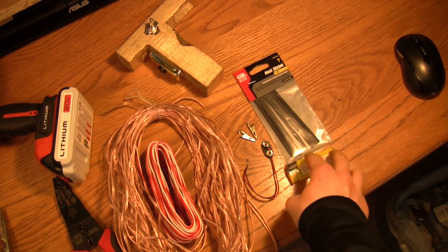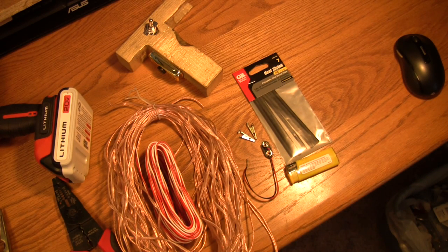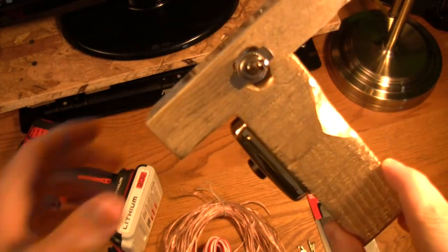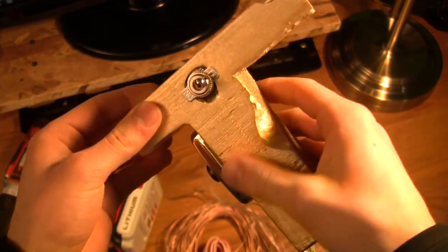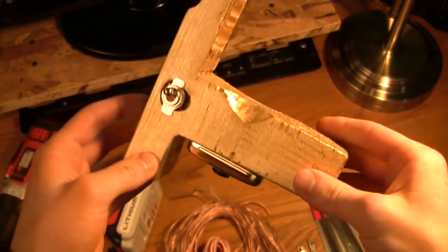And then you're going to want a 9 volt snap connector, a couple alligator clips, some heat shrink tubing, this is 1/8th of an inch, a lighter for the heat shrink tubing unless you have like a heat gun or something like that, and then of course your pistol grip.